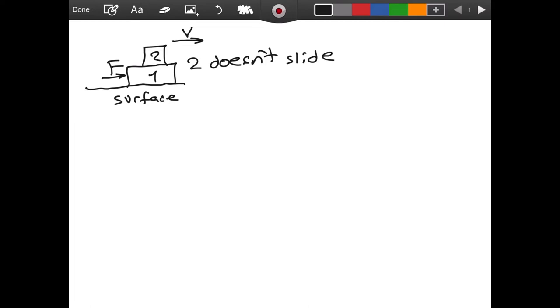And you can also try the exact system that we have drawn here yourself. You can find two blocks, put one of them on top of the other and push the block that is below. And you can see that at some speeds with some force F you can achieve the case that the upper block does not slide. So this system is very possible to happen. This is not a hypothetical system.